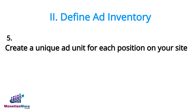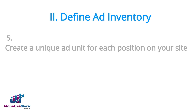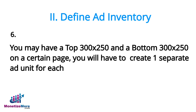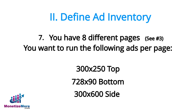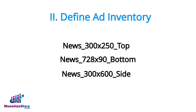In order to analyze performance, it's important you create separate ad units for each position on your site. You may have several ad positions for 300x250 ad units — perhaps one above the fold and one below the fold — and it's best you create separate ad units for each. Continuing with our example, we are going to run three ad units per page: a 300x250 top unit, a 728x90 bottom unit, and a 300x600 side unit. Since we have eight sections, that means we need to create 24 overall units.